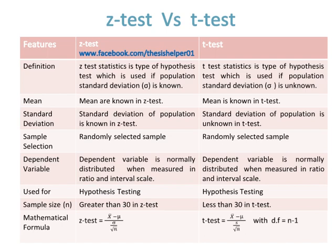Sample selection for both Z-test and T-test is based on a randomly selected sample. The dependent variable in both is normally distributed when measured in ratio and interval scale. Both Z-test and T-test are used for hypothesis testing.